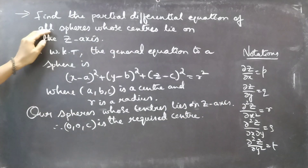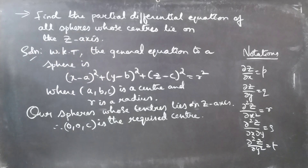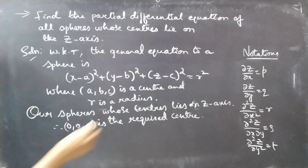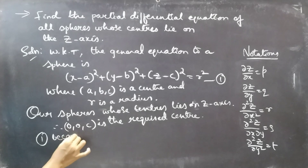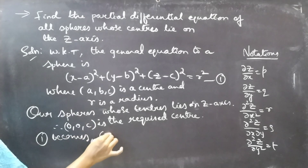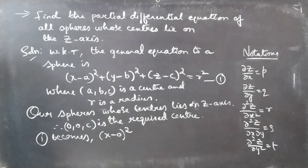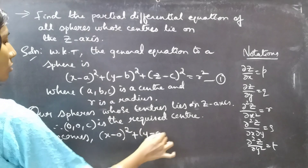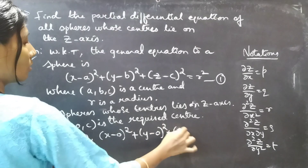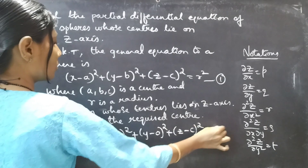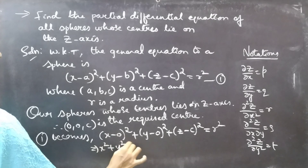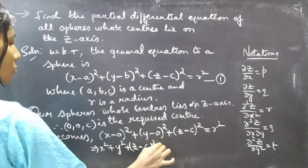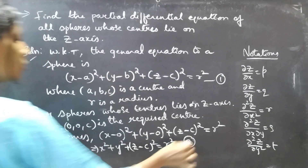All spheres whose centers lie on the z-axis have center (0, 0, c). So the equation becomes: (x − 0)² + (y − 0)² + (z − c)² = r², which simplifies to x² + y² + (z − c)² = r². Consider this as Equation 2.